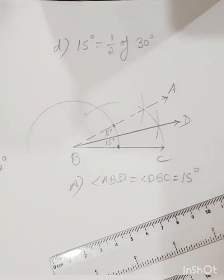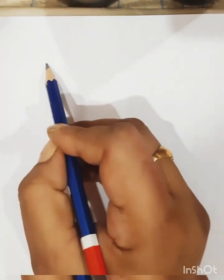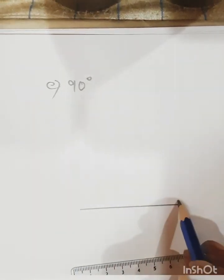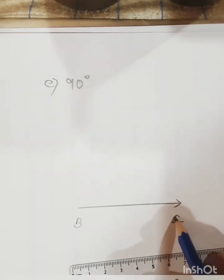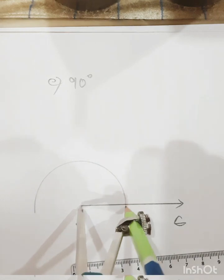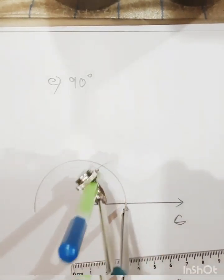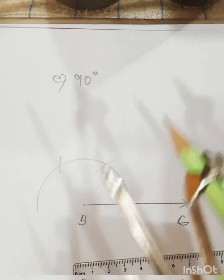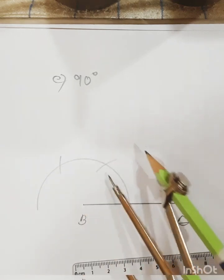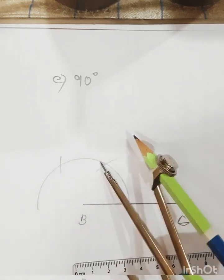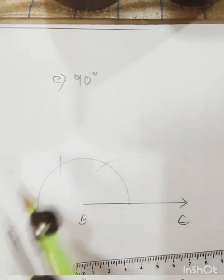Next let's do 90 degrees. Make a ray BC. Keep the compass at B and draw a semicircle. The first arc gives 60 degrees, the second arc gives 120 degrees. Now keep your compass at this first arc point and this second arc point — you are bisecting the 60 degree segment between them — because 60 plus 30 equals 90 degrees.